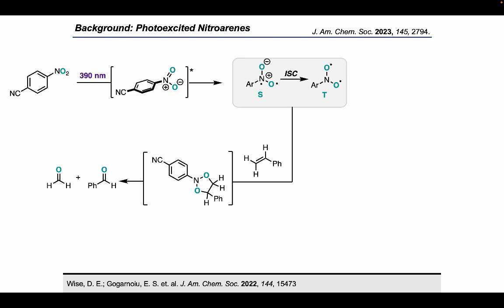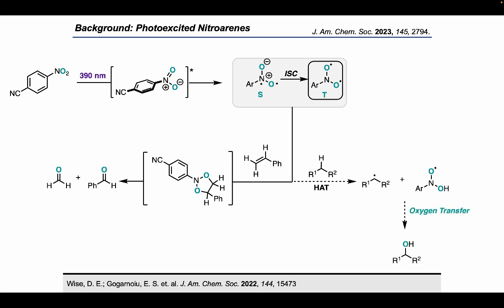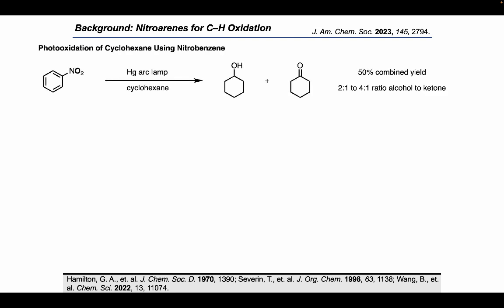Looking at this triplet biradical of the nitroarene, we questioned whether it could react with an alkane to promote a hydrogen atom transfer event to generate a carbon-centered radical, which could then potentially react further with the nitroarene to result in an oxygen transfer event to give alcohols. Searching the literature, we found a limited number of examples showing this transformation's feasibility. Hamilton and later Severin both demonstrated that UV irradiation of nitroarenes resulted in oxygen transfer to a select number of alkanes, lending support that photo-excited nitroarenes are capable of promoting oxygen transfer to alkanes.